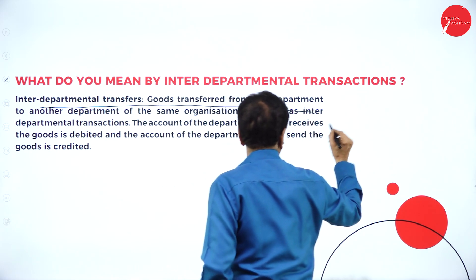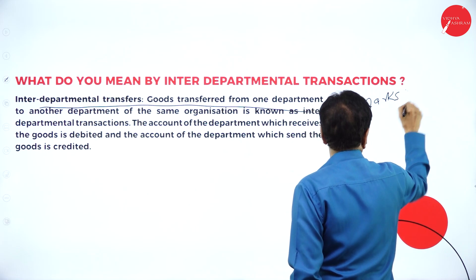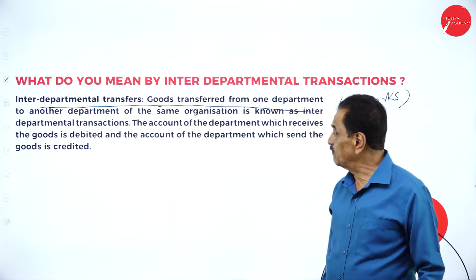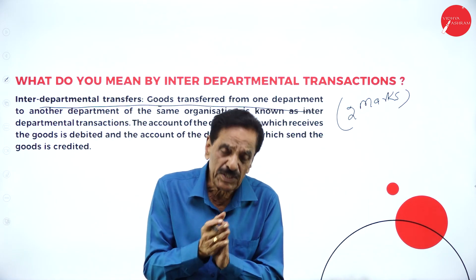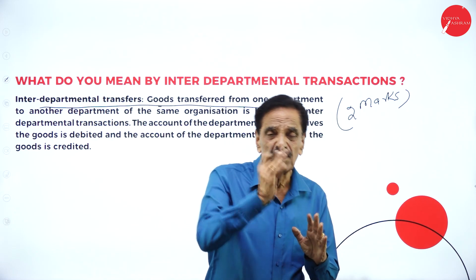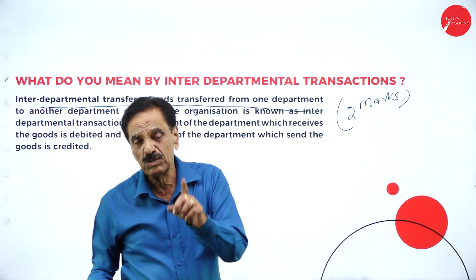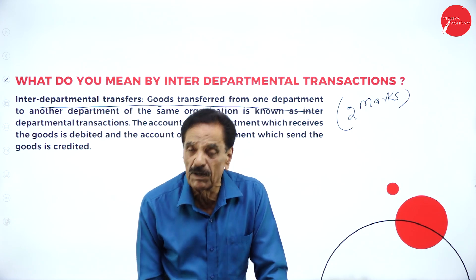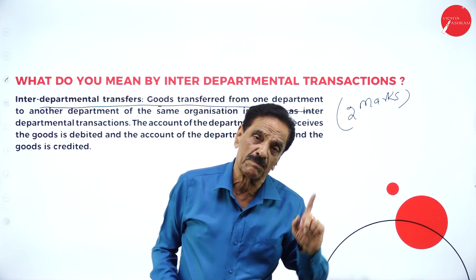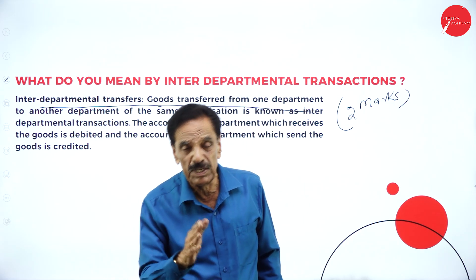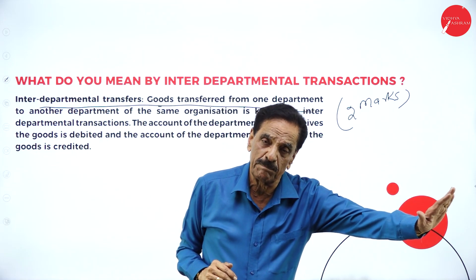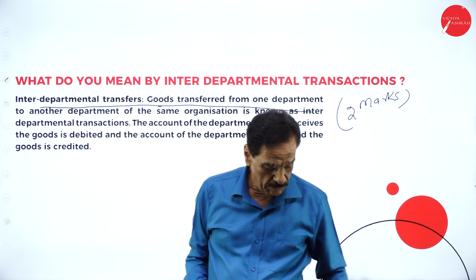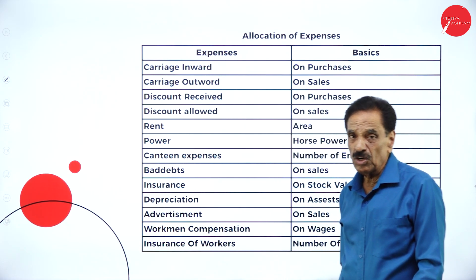Now, what do we mean by inter-department transfer? Goods transferred from one department to another department of the same organization. There are three departments: A, B, and C. If goods are transferred from A department to B department, credit A department and debit B department. If transferred from B department to A department, credit B department and debit A department.